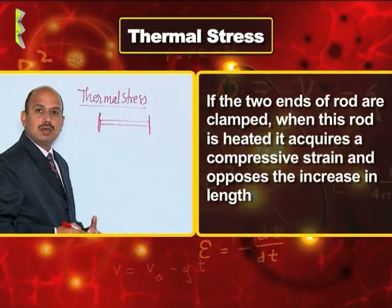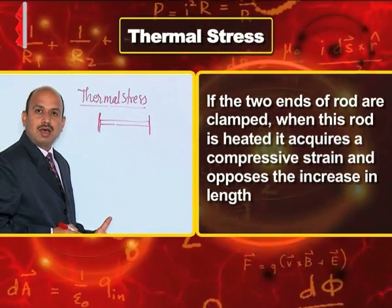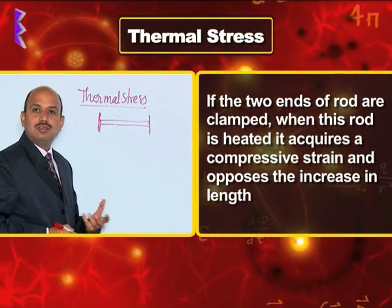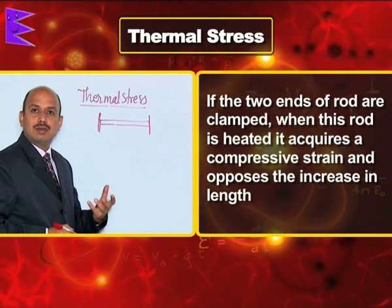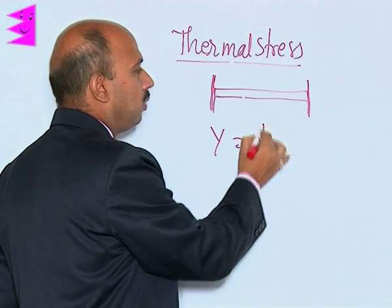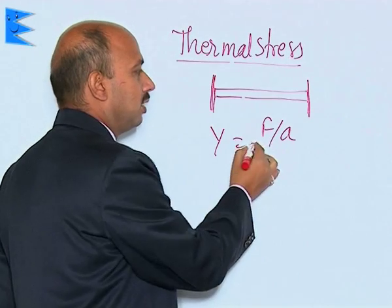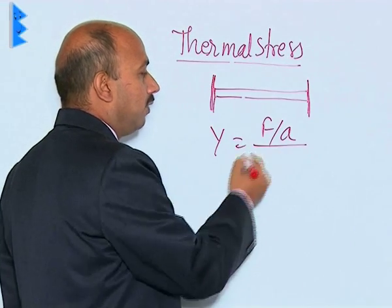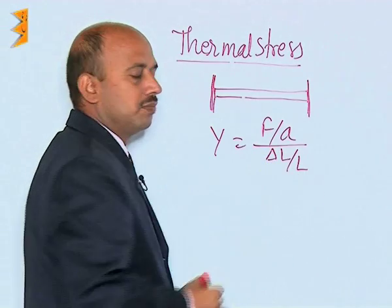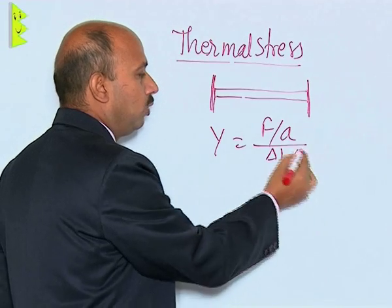When you heat this rod, the rod provides compressive stress and opposes the increase in length. This stress is known as thermal stress. You know Y is equal to F upon A — that is force upon area, which is tensile stress — divided by delta L by L, that is the longitudinal strain.